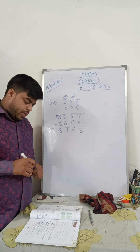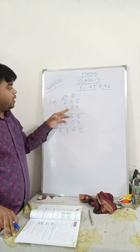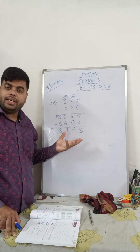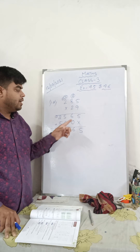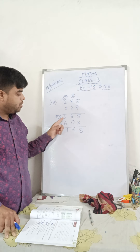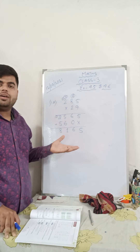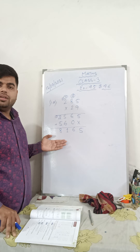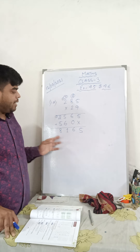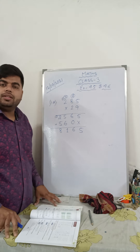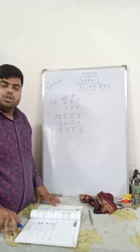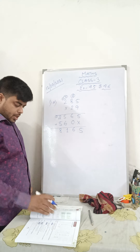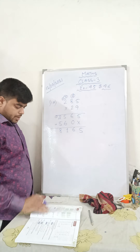The most important thing you have to do is multiply properly. For that, you have to know the tables properly. Please write the digits one below the other so that when you do the final sum, the final step, you don't make any mistake. Please arrange the digits properly. All the sums are almost the same.